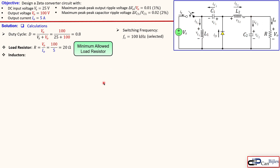The values for inductors L1 and L2 are next. The average inductor currents can be calculated using the steady-state situation for the circuit. The steady-state current for L2 is exactly the same as the output current, because the steady-state current for the capacitor is zero, meaning IL2 equals I_load, that is 5 amps. Similarly, IL1 equals the average of the source current, because the capacitor current in steady state is again zero. Applying Kirchhoff's current law, IL1 at steady state equals IS.